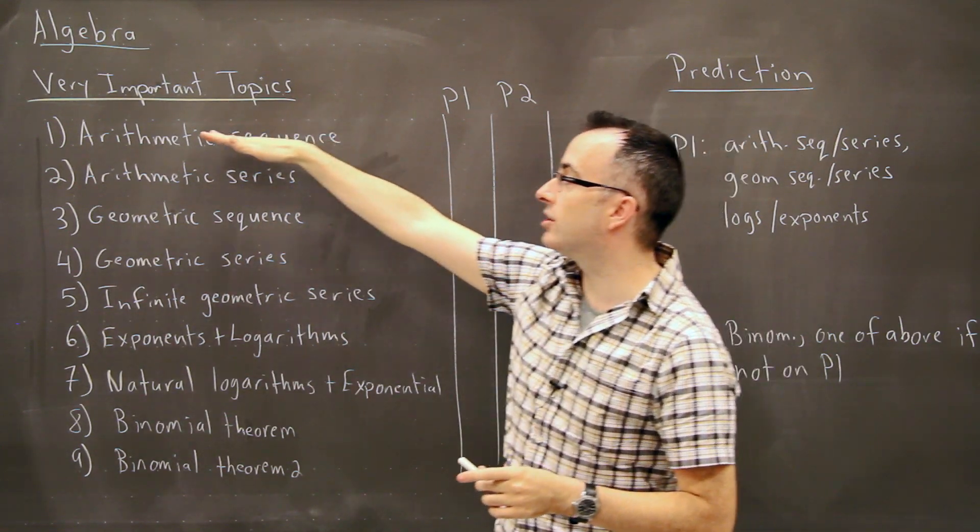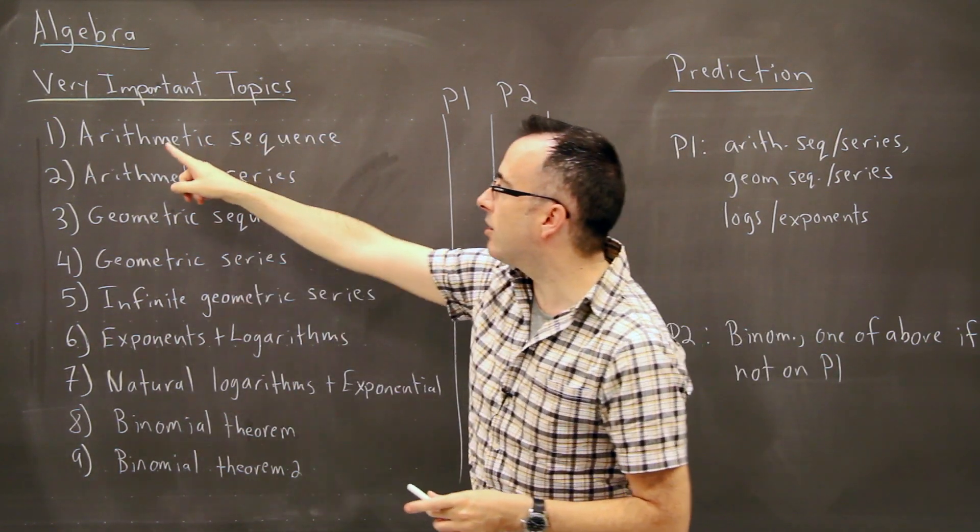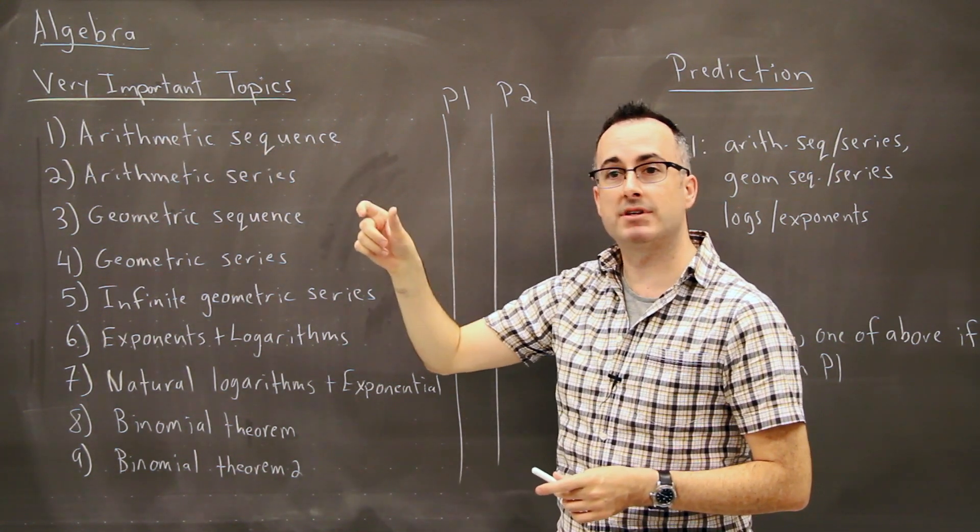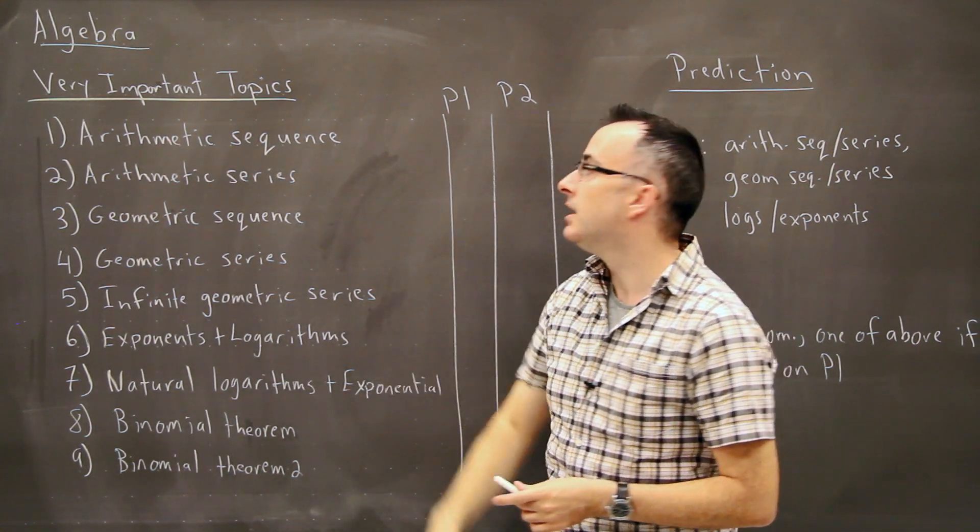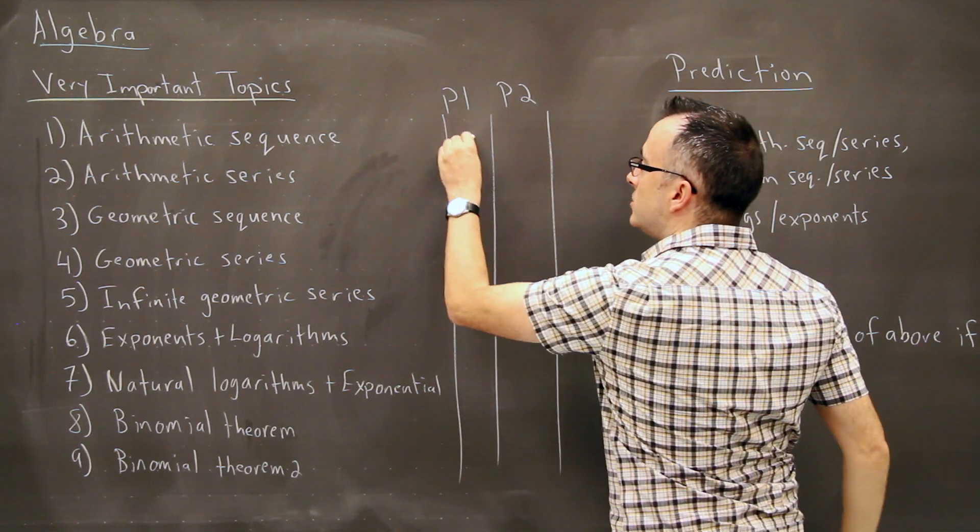So we're going to quickly go through what I consider the most important topics. These are the ones you should look at. So Arithmetic Sequence. This is just looking at a list of numbers that has a common difference. And those ones show up most often on Paper 1 and 2. So these you find all over the place.